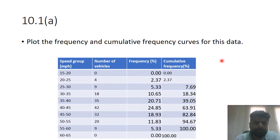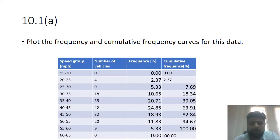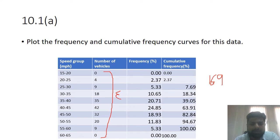I have calculated the frequency and cumulative frequency for each group. First, I needed the total number of values, so I took the summation of the entire column and got 169. Then for frequency, I took each number, divided by the total 169, and converted to percentage. So 4 divided by 169 converted to percentage gives 2.37 percent.